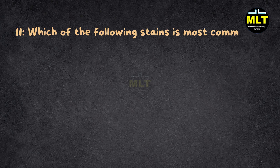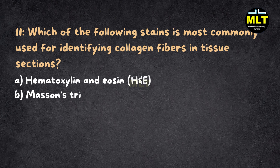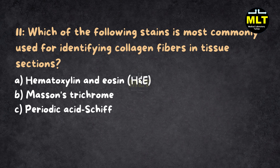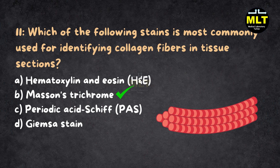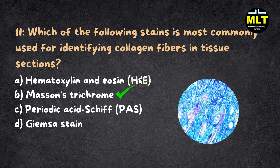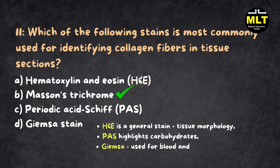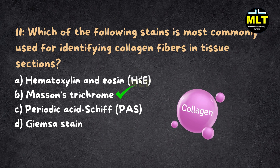Question 11: Which of the following stains is most commonly used for identifying collagen fibers in tissue sections? Options: A. Hematoxylin and eosin, B. Masson's trichrome, C. Periodic acid-Schiff, D. Giemsa stain. Correct Answer: B. Masson's trichrome. Explanation: Masson's trichrome stain is specifically used to identify collagen fibers in tissue sections, giving them a blue or green color. H&E is a general stain for tissue morphology, PAS highlights carbohydrates, and Giemsa is primarily used for blood and bone marrow samples. For collagen, Masson's is the go-to stain.